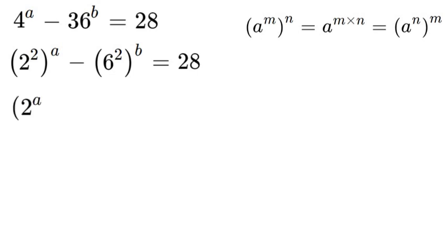So what we'll have then is 2 to the power of A squared minus 6 to the power of B squared, all again equal to 28.